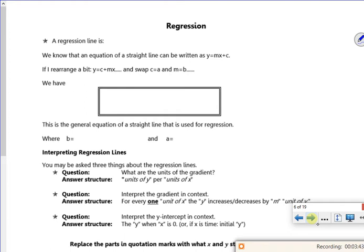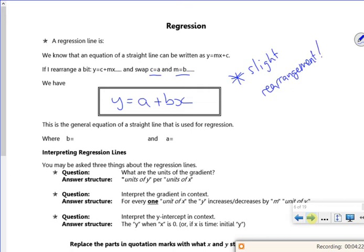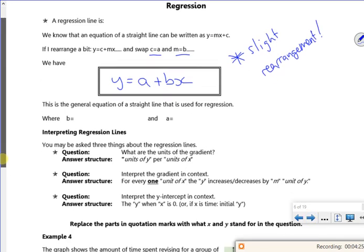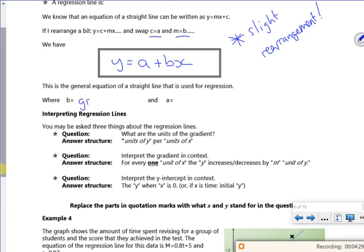Right, so we've got regression lines now. You've all done lines, you've all done straight lines, we've all done lines of best fit. It's not quite a line of best fit, but it does the job. So we have, because it says swap c to be a, swap m to be b. And on our calculators it has it as a plus bx, so it's just a slight rearrangement of what we're used to. So b is my gradient and a is my y-intercept.